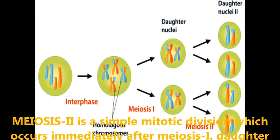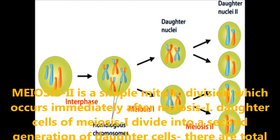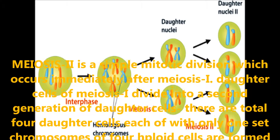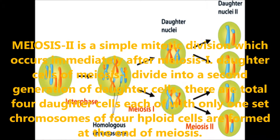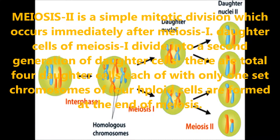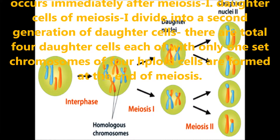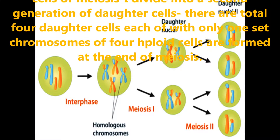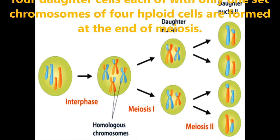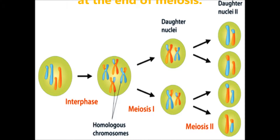Meiosis 2 is a simple mitotic division which occurs immediately after meiosis 1. The daughter cells of meiosis 1 divide into a second generation of daughter cells, giving a total of four daughter cells, each with only one set of chromosomes. There are four haploid cells formed at the end of meiosis.